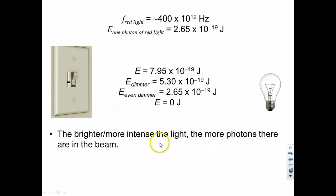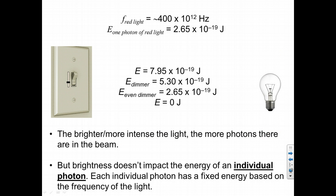So the brighter or more intense the light, the more photons there are in that beam. But the brightness, we can see, does not impact the energy of any single individual photon.